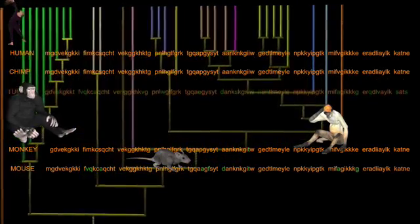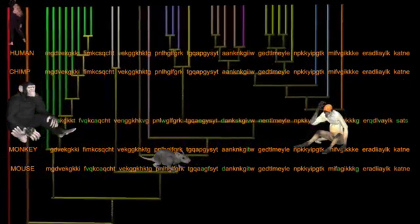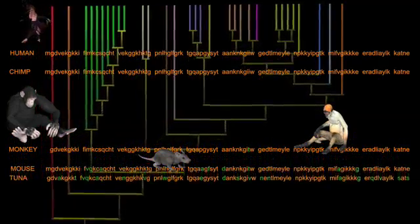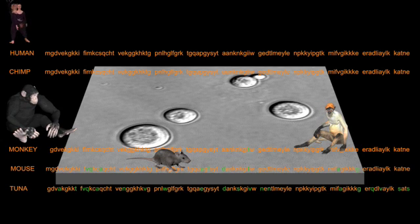The differences increase as we step further back in time and further from our own branch on the tree of life. The yeast itself has 51 amino acid differences from that of humans and chimps, and is one of the most distantly related organisms from humans having separated from our branch over a billion years ago.